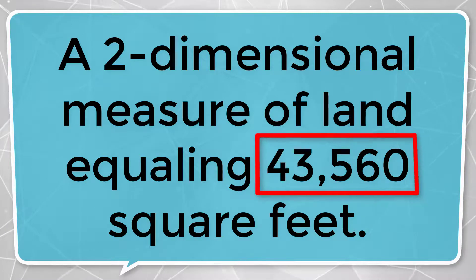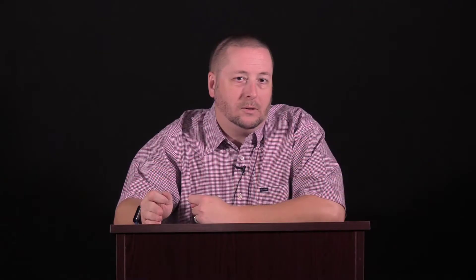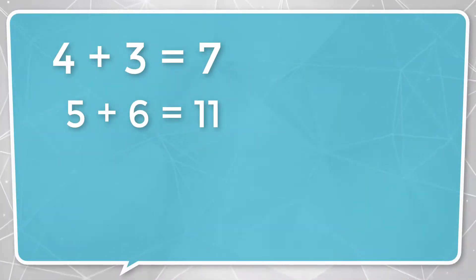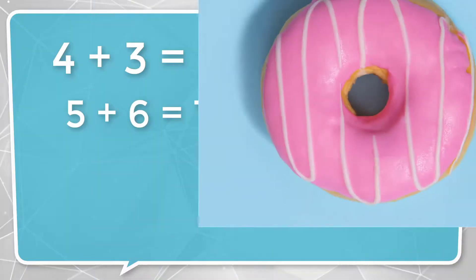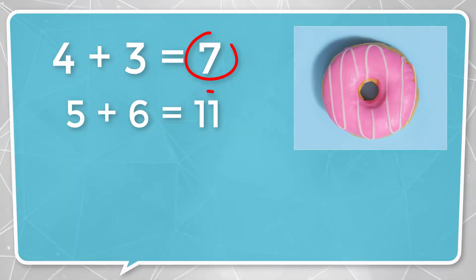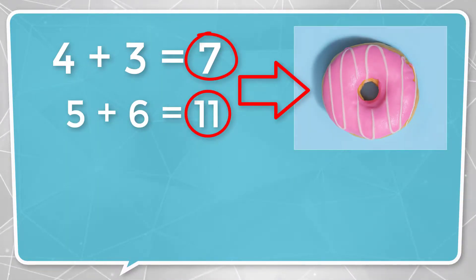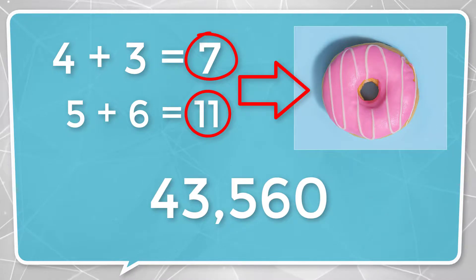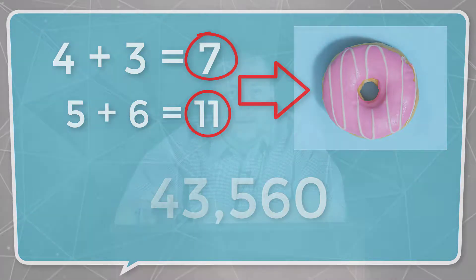What's an easy way to memorize it? Well, let's go to 7-Eleven and pick up some donuts. What does that mean? 4 plus 3 equals 7, 5 plus 6 equals 11, and the zero at the end — well, that's your donut. And as you can tell, I love donuts. So let's go to 7-Eleven, get some donuts. How many square feet in an acre? 43,560. Memorize it — easy questions to answer correctly on your exam if you've got it down.